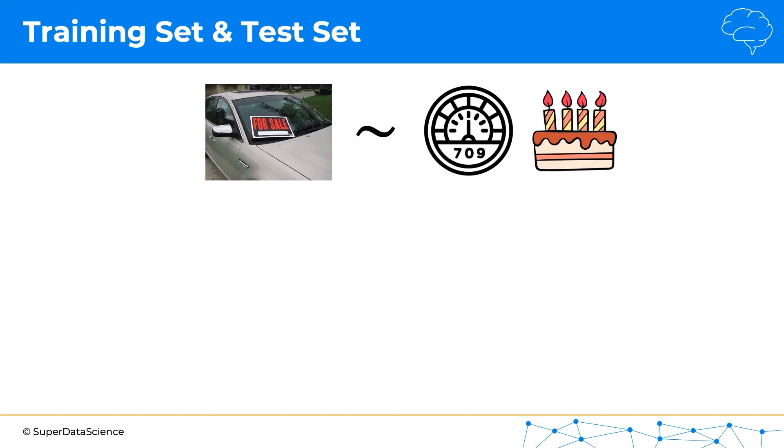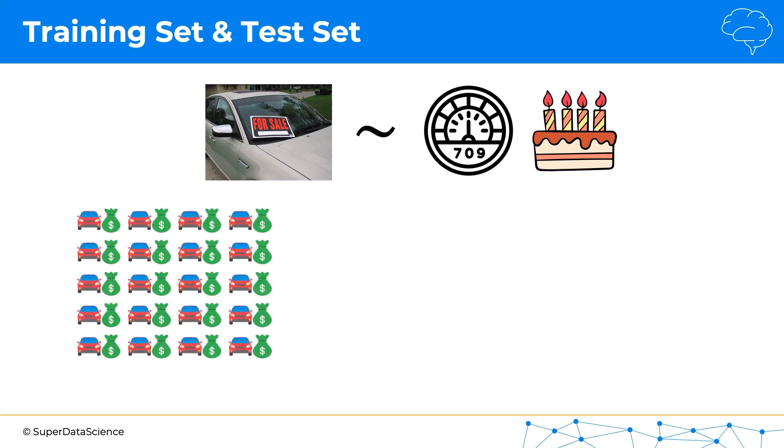That is your dependent variable and your independent variables are the mileage of the car and its age. In your data that was supplied to you, you have 20 cars in total. Of course, that's not a lot, but for illustrative purposes for our tutorial, that will be sufficient.